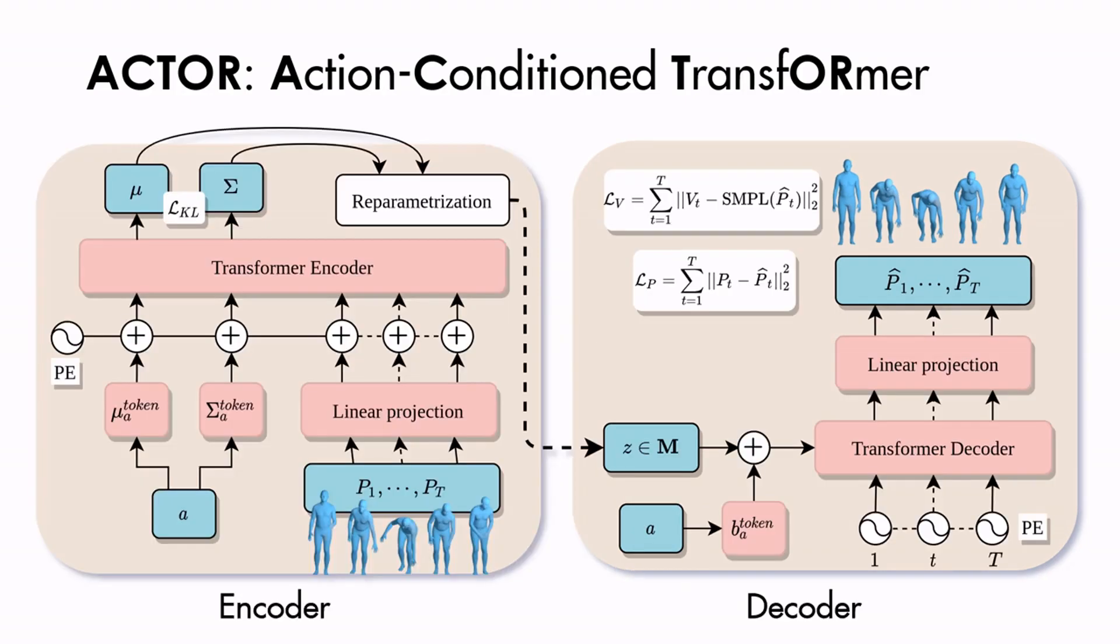The encoder takes a sequence of poses of arbitrary length and the respective action label as input and produces distribution parameters mu and sigma of the motion latent space. Using the re-parameterization trick of VAEs, we sample a latent vector z from this distribution.